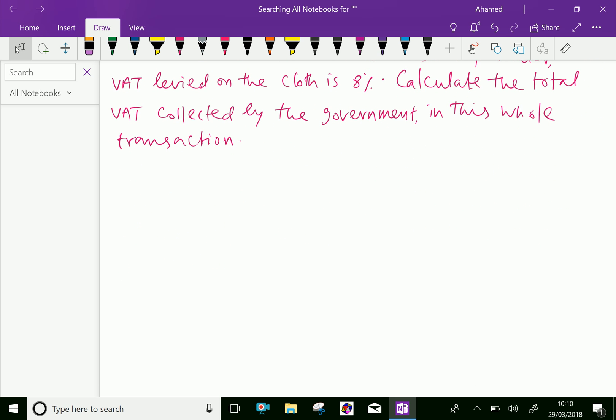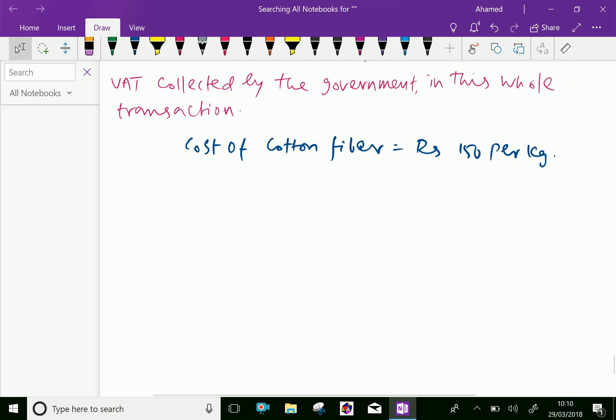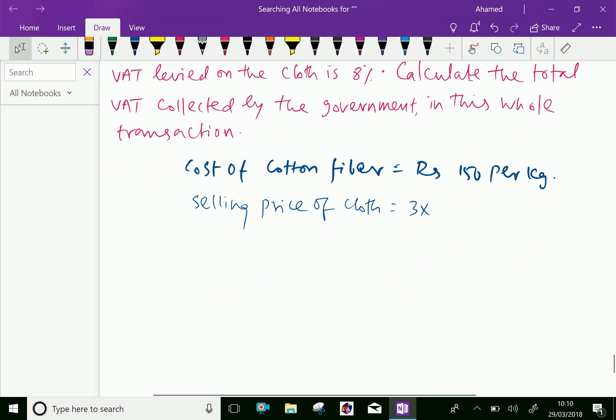Here, cost of cotton fiber Rs. 150 per kg. For the selling price of cloth, 3 into 140. This Rs. 420.